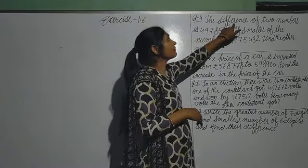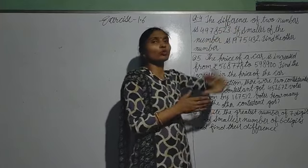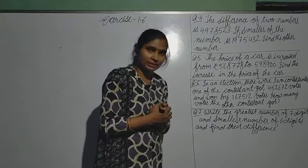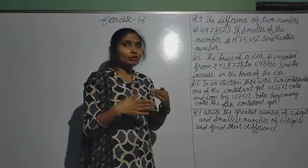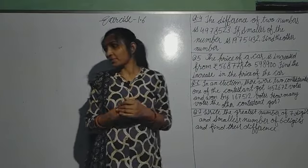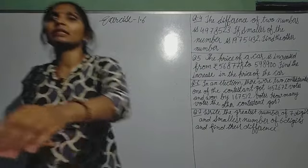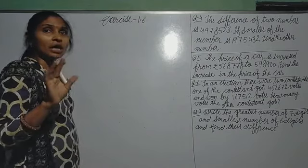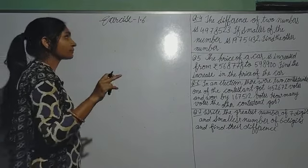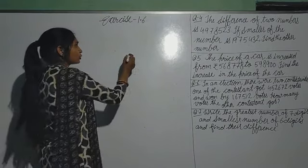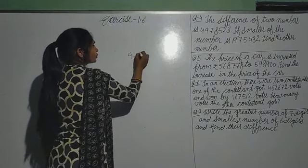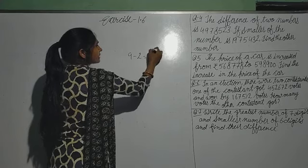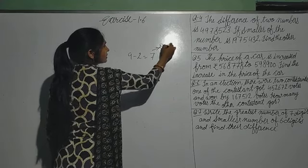What is difference? Difference is the result after subtraction of two numbers. For example, we have 9 minus 2 — so 7. 7 is our difference.